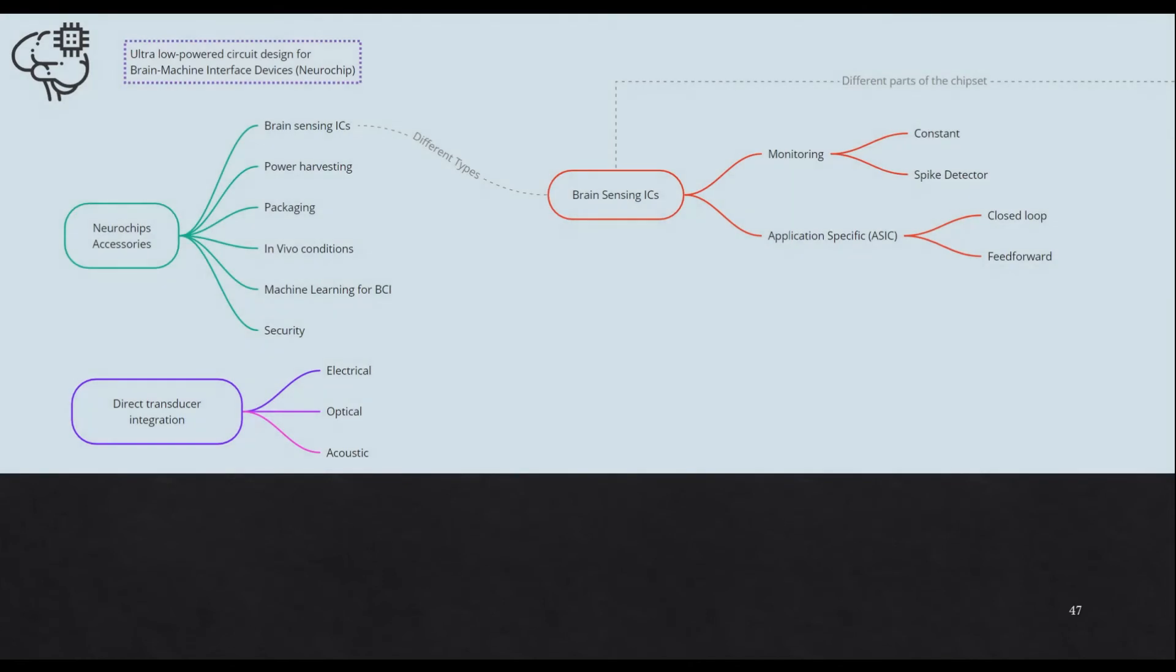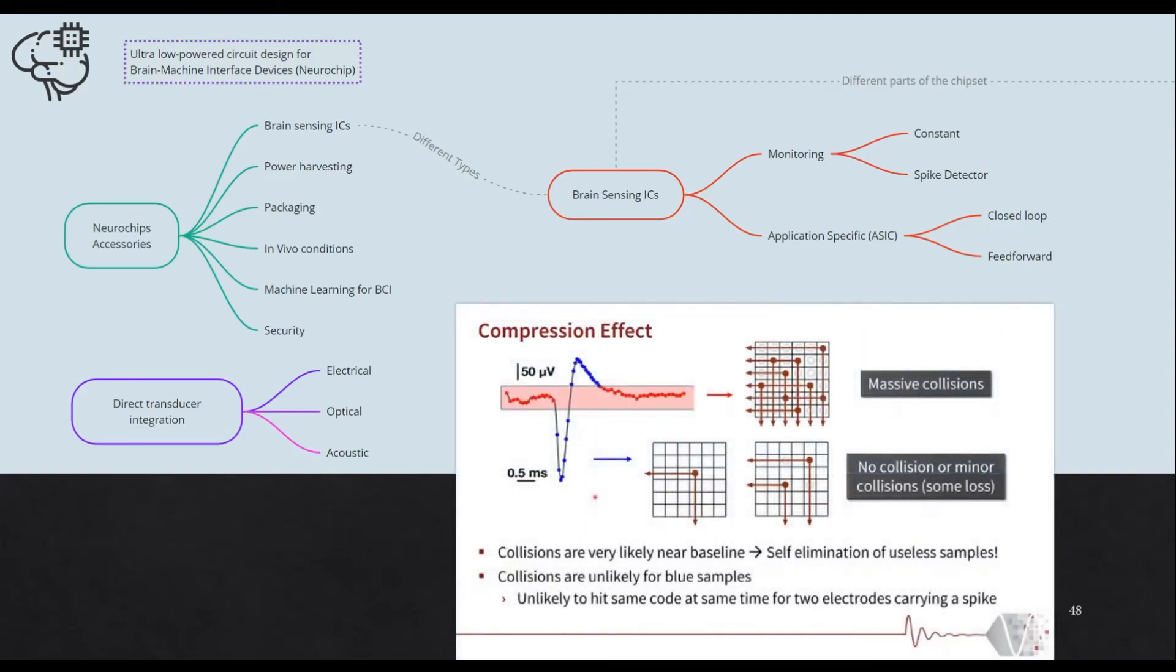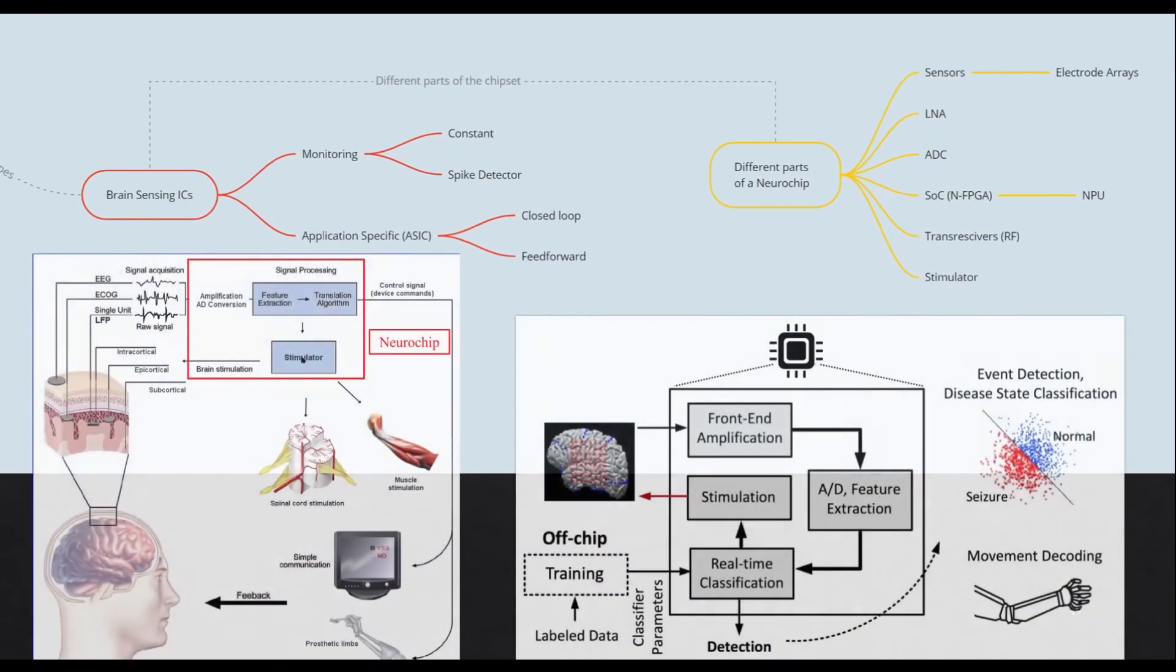All right, next one. Now we have neurochips. After all of that, we know how the brain works and how we can connect to it. These neurochips now have their own challenges. They have to operate on the brain in a body and they need to be low powered. We have to develop some methods to charge them and depending on what they do they are secreted in different parts. They can monitor the signal constantly or they can even just take the spikes out of it.